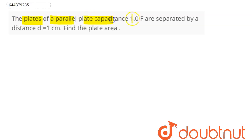Find the plate area. So for parallel plate capacitor, we have capacitance given as A epsilon not divided by distance d.